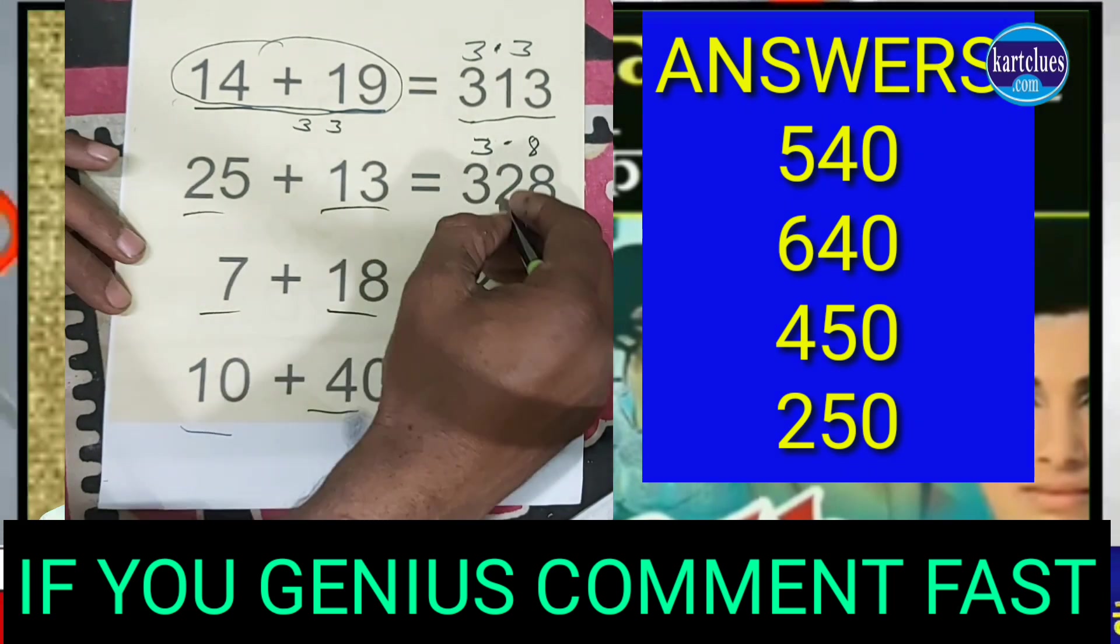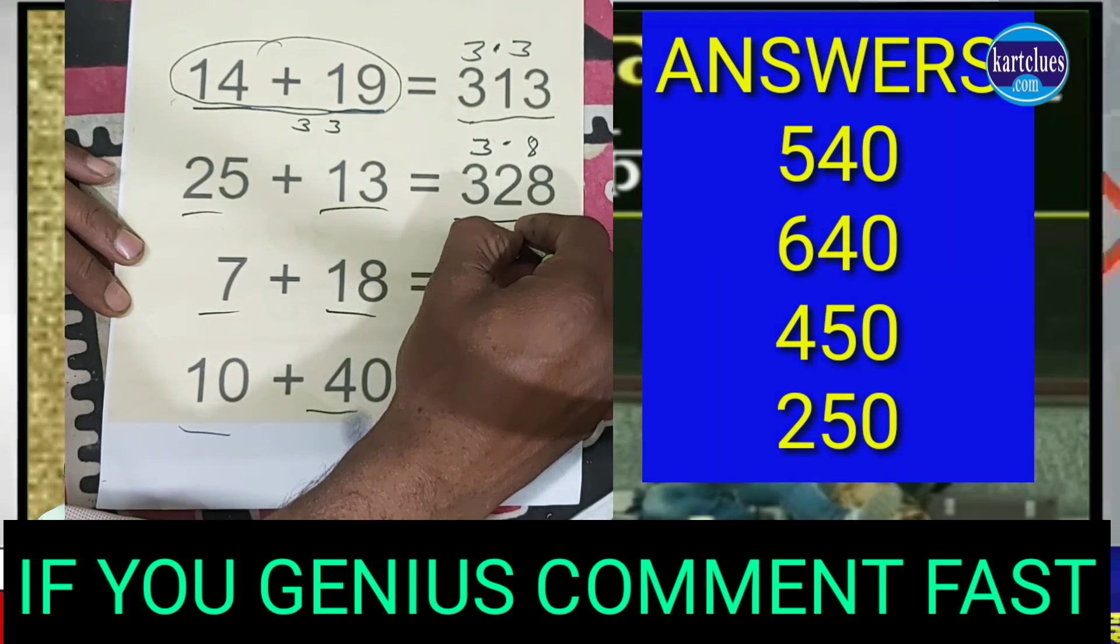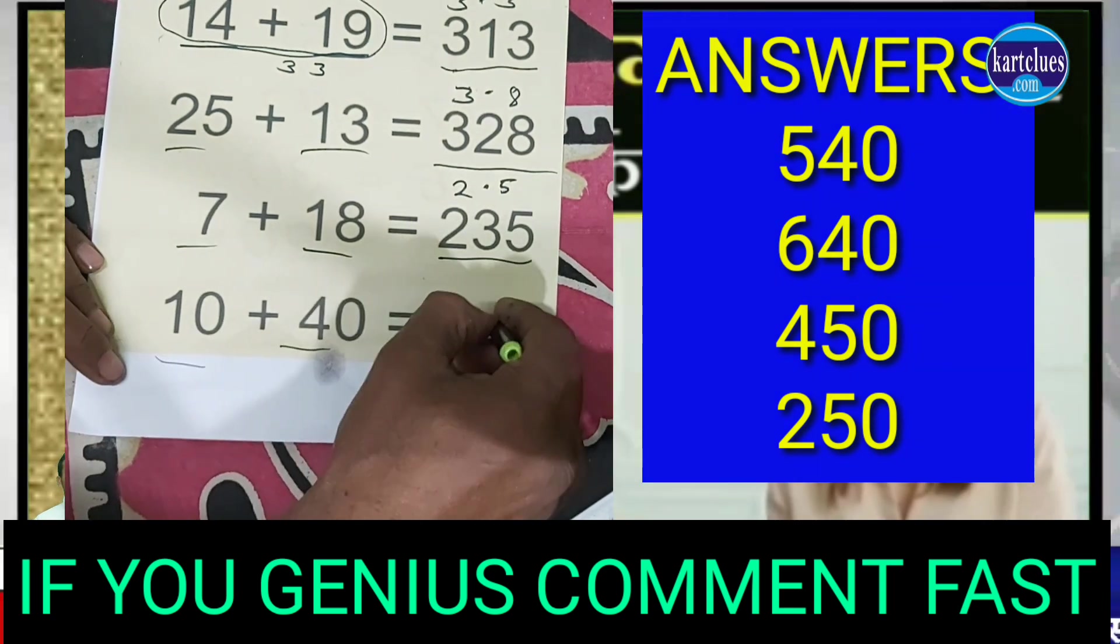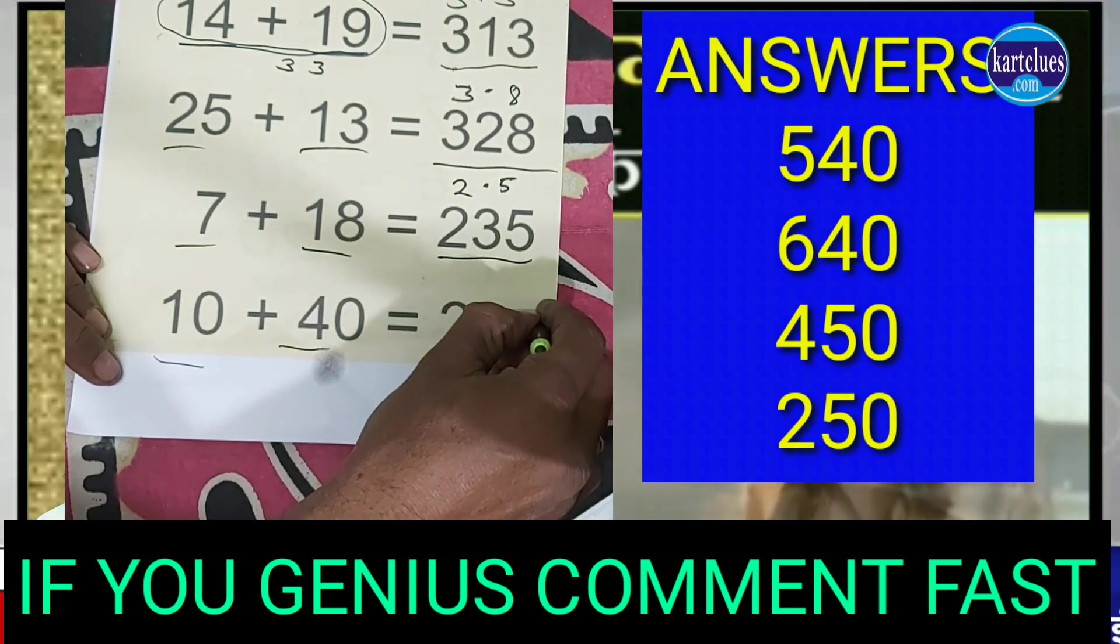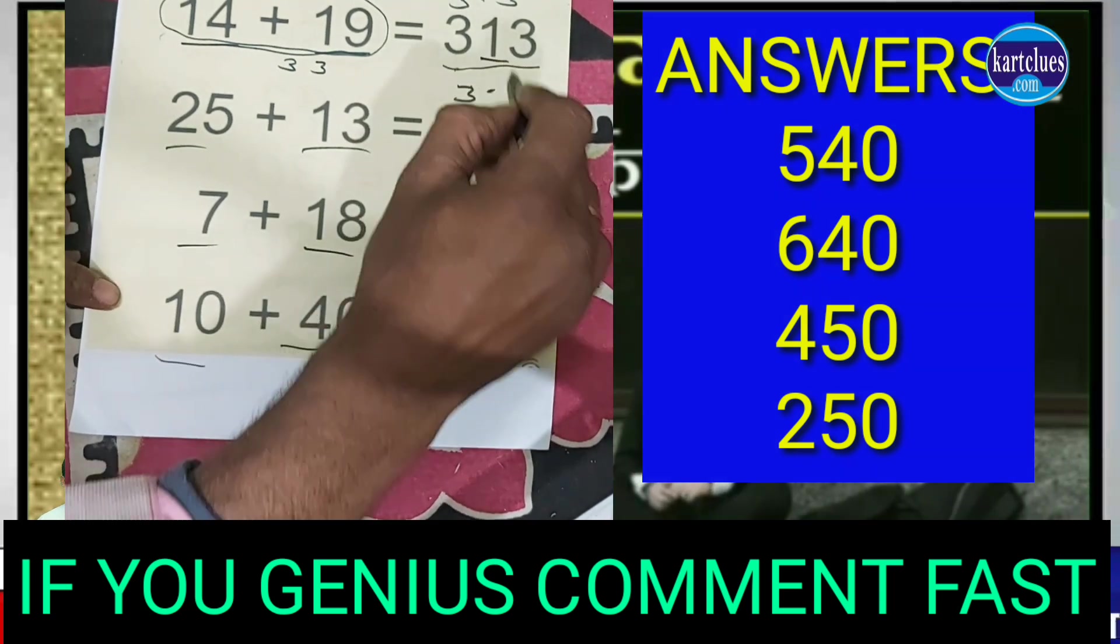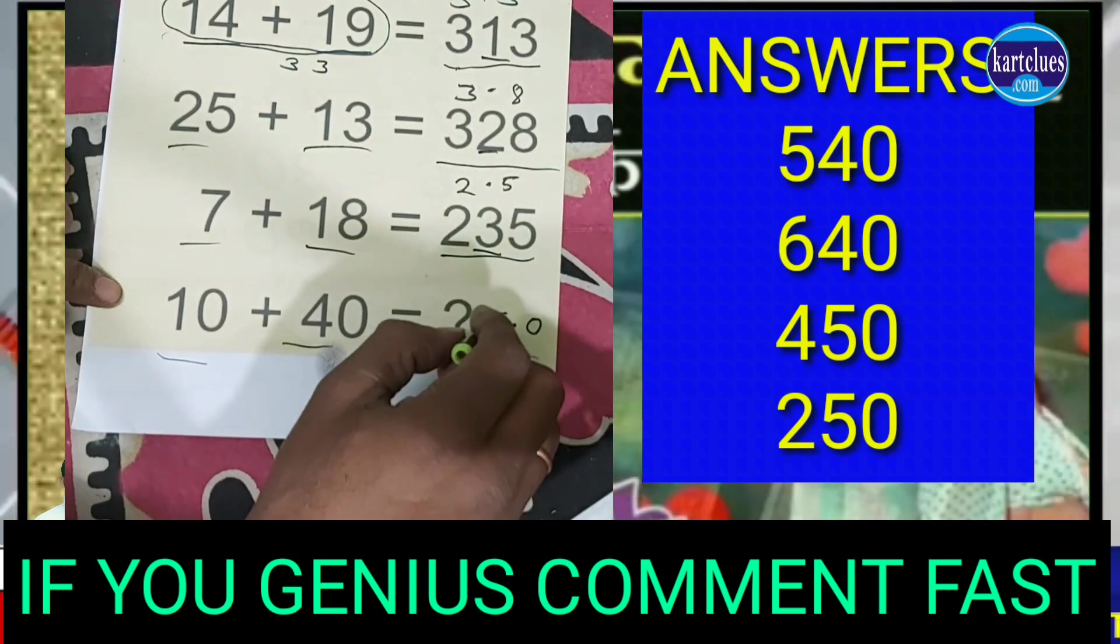add 7 and 18 it equals 25, and this number is vacant. And here you have 10 and 40 which equals 50, and leave this number vacant. Now watch the series: 1, 2, 3, and 4.